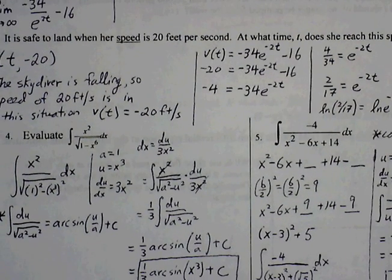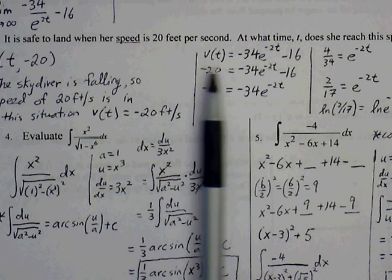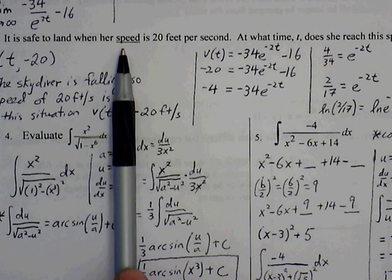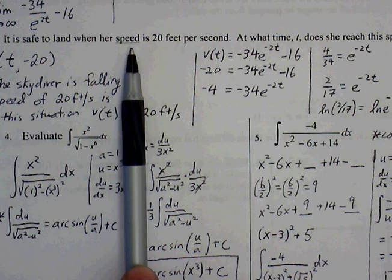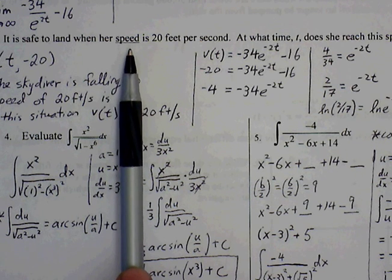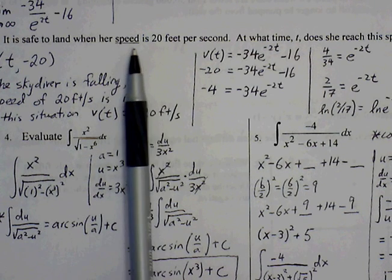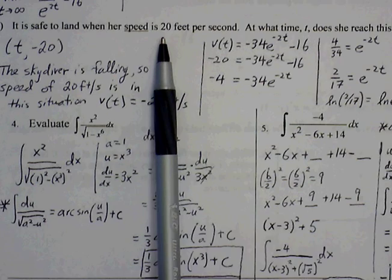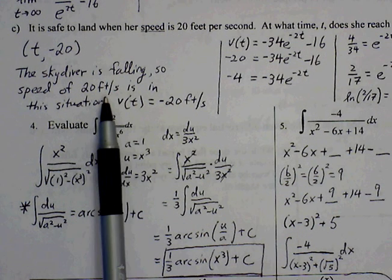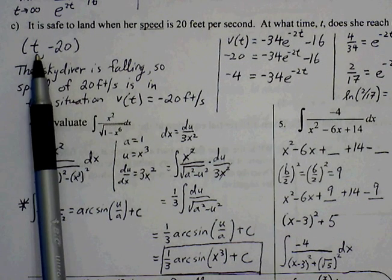Part C. It is safe to land when her speed is 20 feet per second. At what time t does she reach this speed? So now this is the reason why this is underlined, because when speed is 20 feet per second, the velocity of the skydiver is always going to be negative, because the skydiver is always going to be falling. So when you're talking about speed of 20 feet per second, in terms of velocity, this is talking about a velocity of negative 20 feet per second. So skydiver is falling, so the speed of 20 feet per second, in this situation, means that velocity is negative 20 feet per second.